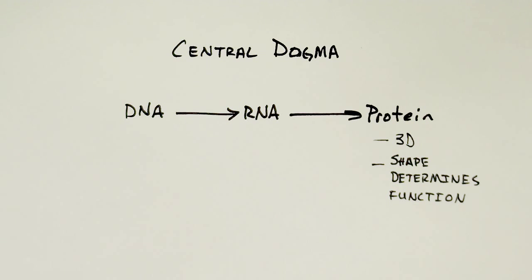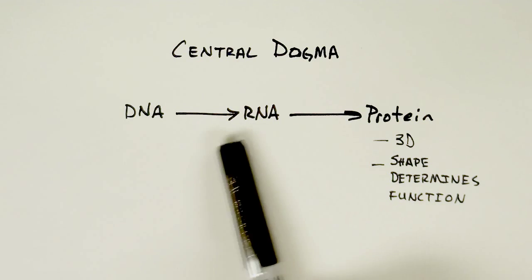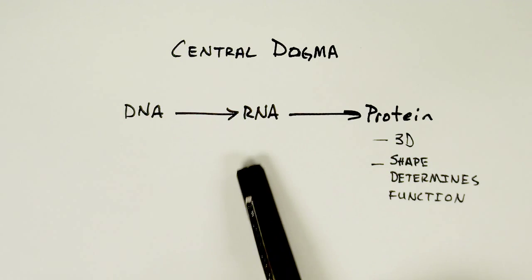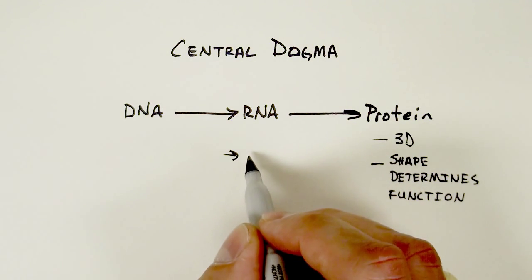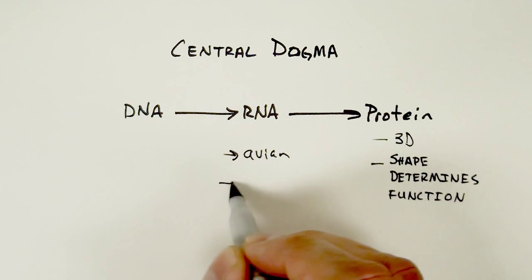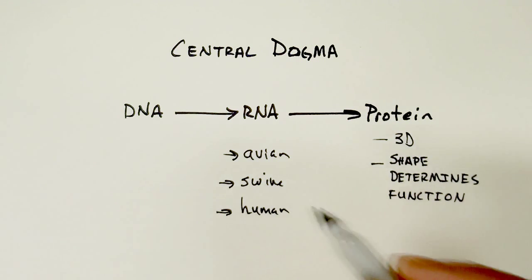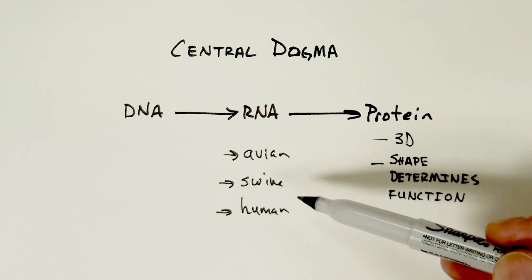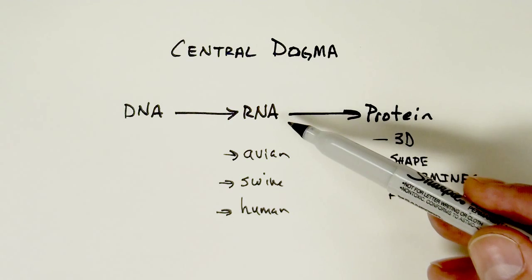Another thing I wanted to address is where the name swine flu originally came from. If we take the virus particles, which are RNA-based, and isolate and sequence the virus — figuring out what the A, U, G, and C sequences were — and compare those to a database, we find that certain sections of the RNA matched sequences related to avian or bird-like viruses, some related to swine, and some related to human. A lot of the sequences were most similar to virus sequences previously found in swine. So that's initially why the name swine flu was given — not because it came directly from swine to humans, but because of how similar it was to previous viruses isolated in swine in terms of RNA sequence.